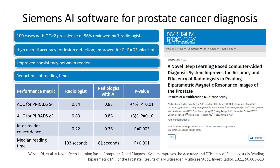For those of you who are interested in the system's performance, this recent publication provides the data. You can see that for a PI-RADS category 4 or above, a radiologist using the AI improves their performance by about 4%. A radiologist using a cutoff of 3 and above also increases performance, but this is not statistically significant. Interestingly, there is improved inter-reader concordance, and the reading time when using the AI actually decreases by about 20%.